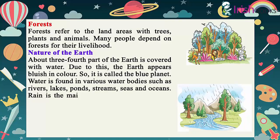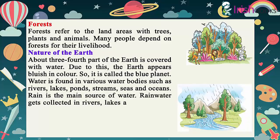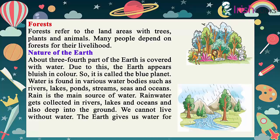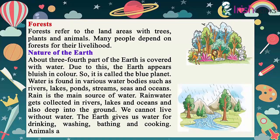Rain is the main source of water. Rainwater gets collected in rivers, lakes and oceans and also deep into the ground. We cannot live without water. The earth gives us water for drinking, washing, bathing and cooking. Animals and plants also use this water.